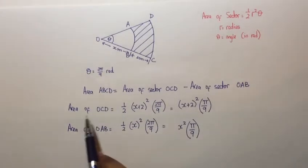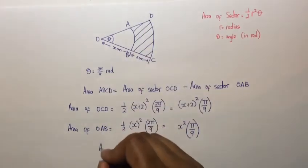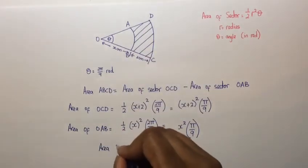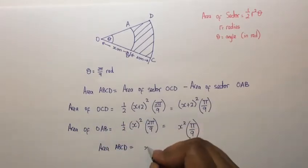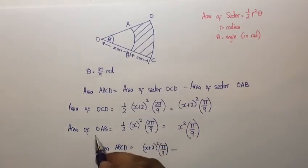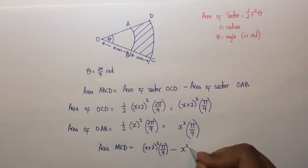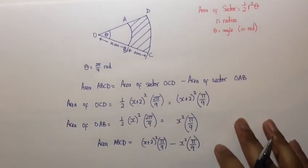Now that we have the area of OCD and the area of OAB, the area of ABCD is simply the area of OCD, which is (x+2)² times π/9, minus the area of OAB, which is x² times π/9.